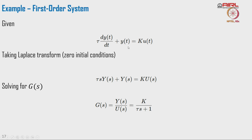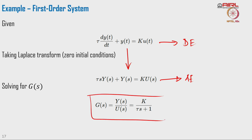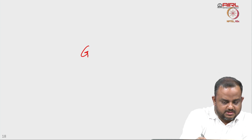We had one example of a first-order system where we took the Laplace transform on both sides of the differential equation to get an algebraic equation. When we take the ratio of the Laplace transform of output to input, we get the particular representation of the system. Now I will take one example, explain it, and then go to MATLAB to show how transfer function problems are solved.